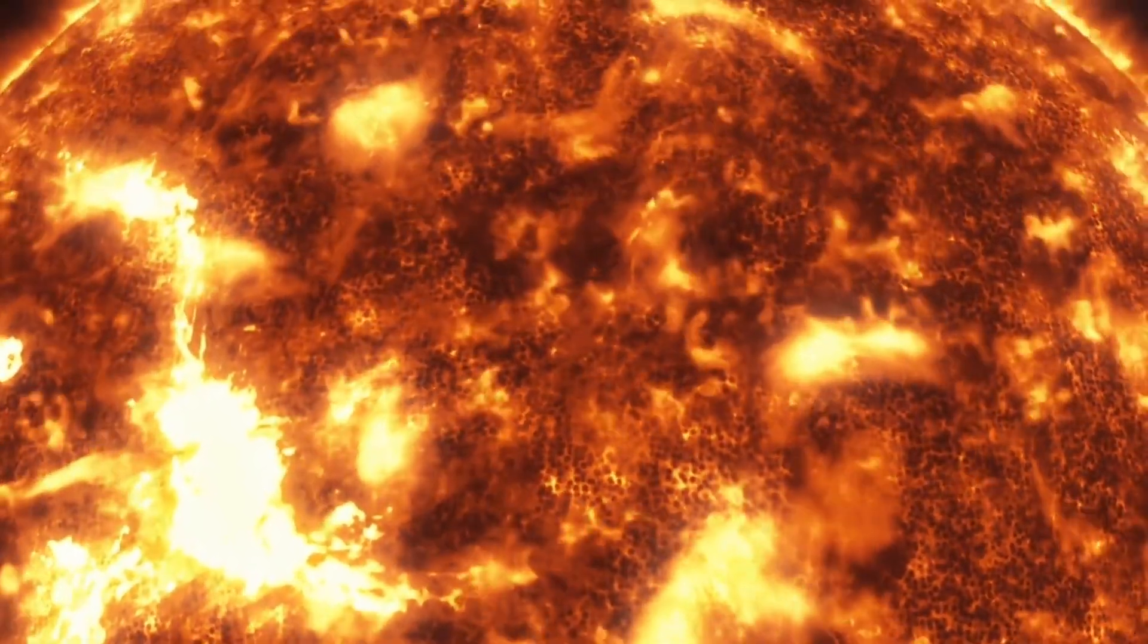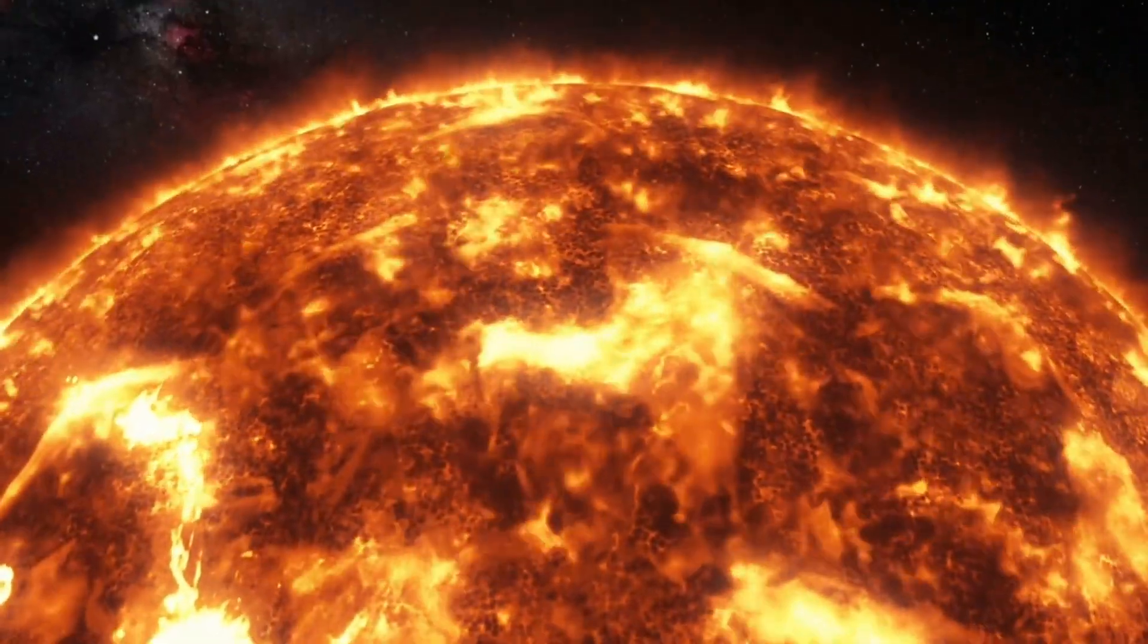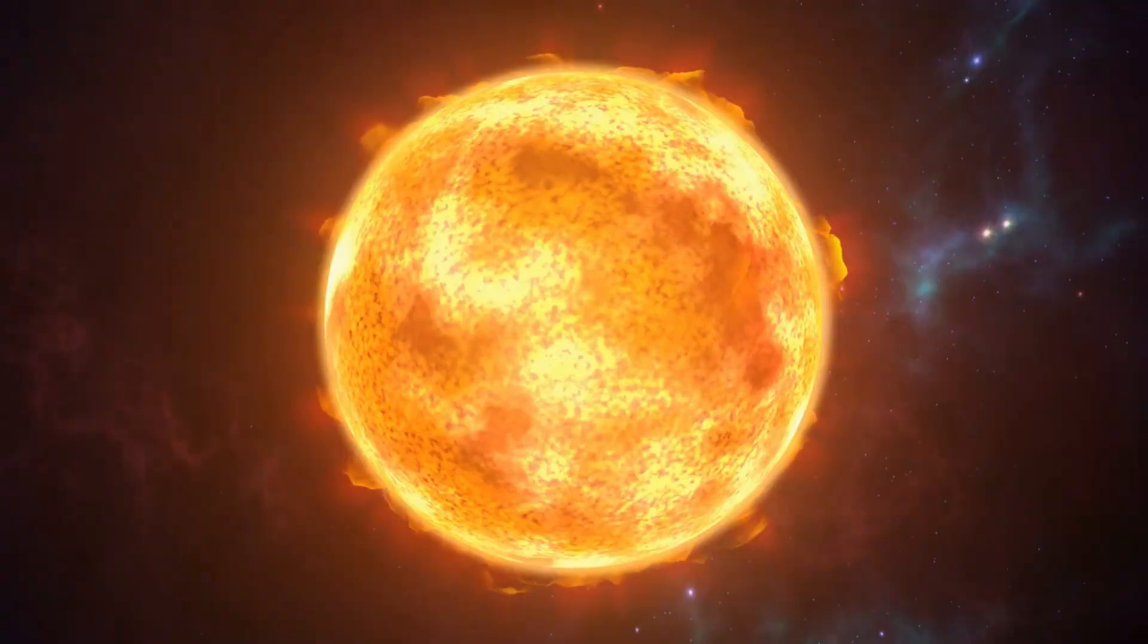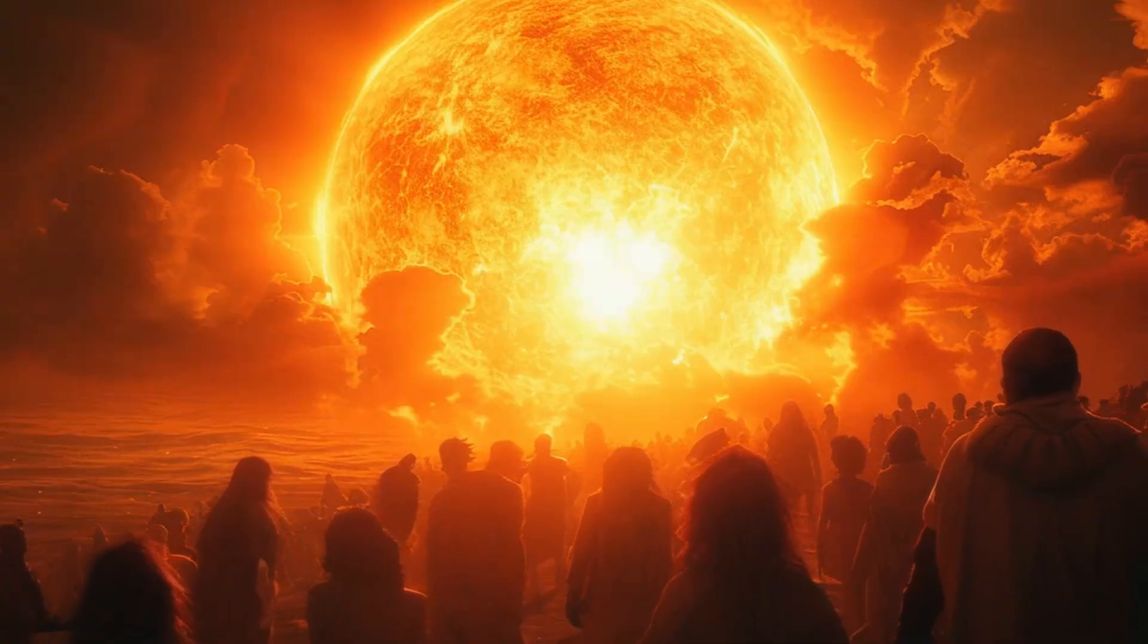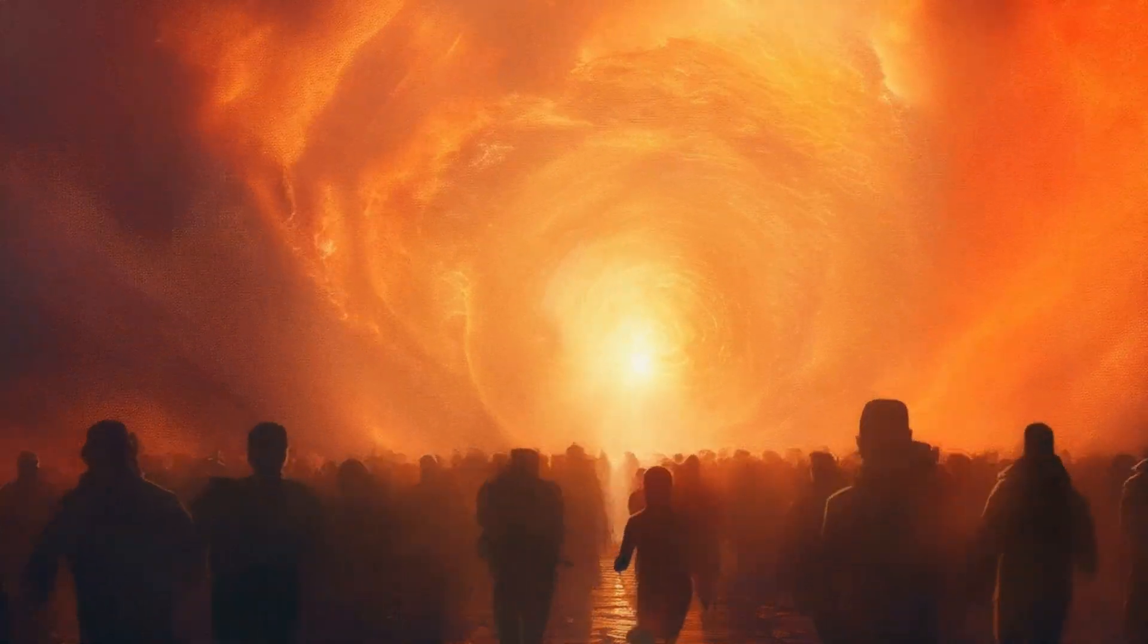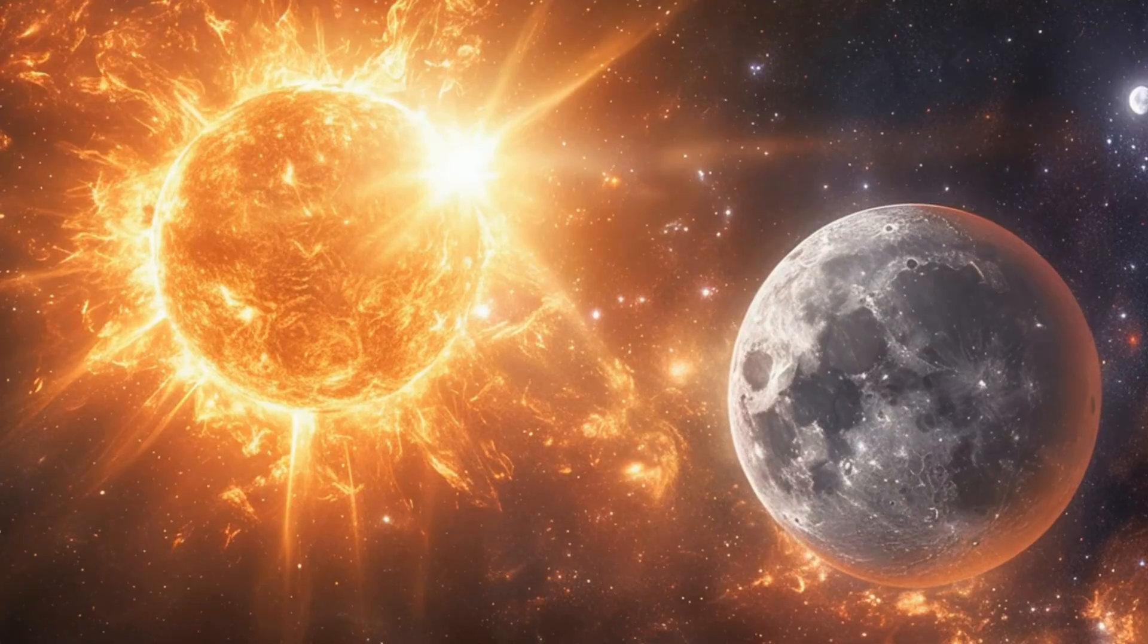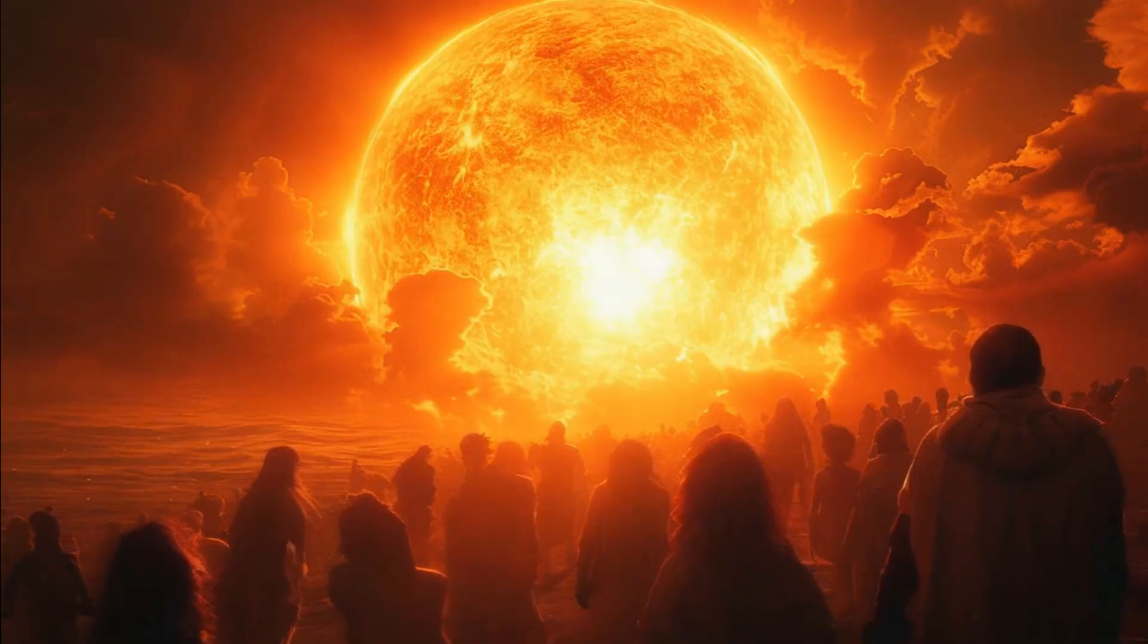However, recent observations have shown that the number of sunspots is rising faster than expected, which is concerning. In the past, a faster rise in sunspot activity has often been linked to stronger solar cycles. Because of this, scientists are now more concerned about how solar cycle 25 could impact Earth. As we move closer to the peak of solar cycle 25, which is expected around 2025, the number of sunspots is expected to rise sharply, and so will the likelihood of large solar storms. These storms can have far-reaching consequences for Earth.